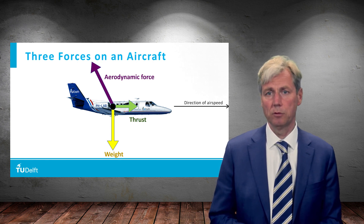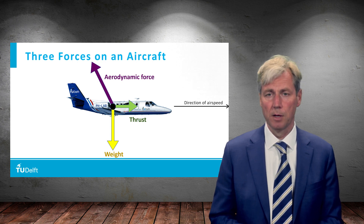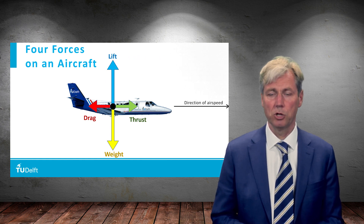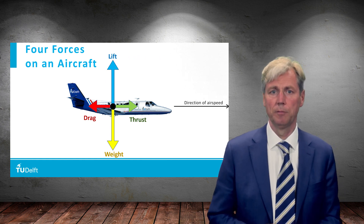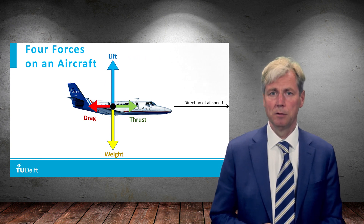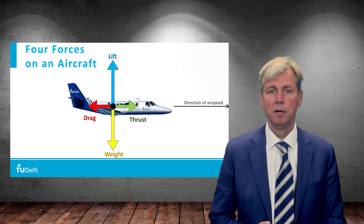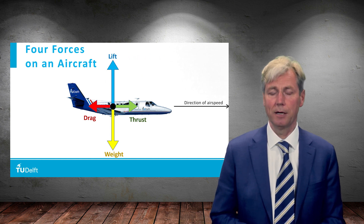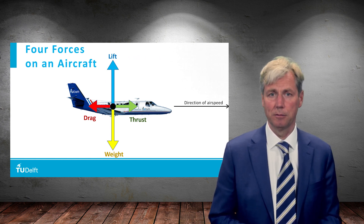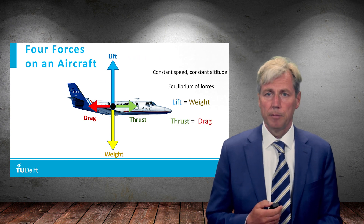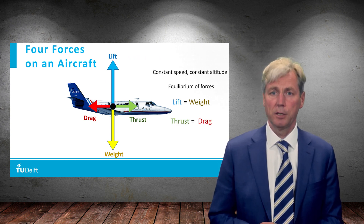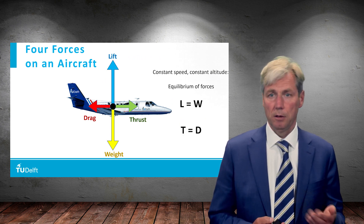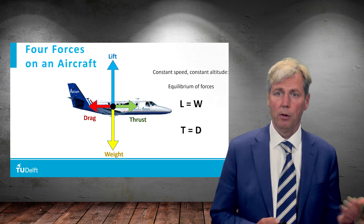These three forces are often drawn as four forces because we use two different components of the aerodynamic force, decomposed using the direction of speed. Everything perpendicular to the speed — in horizontal flight — is lift and weight, which are orthogonal to the direction of speed. In the direction of speed we have drag and thrust. For constant altitude and constant speed there has to be equilibrium: lift equals weight, thrust equals drag — written as L=W and T=D.